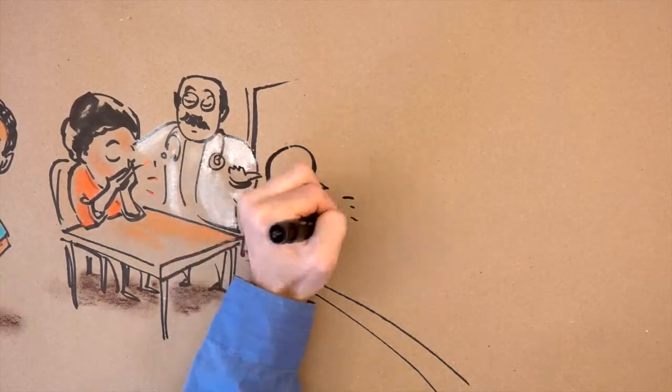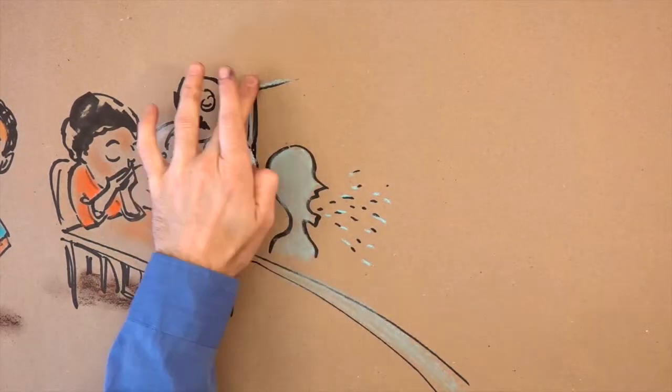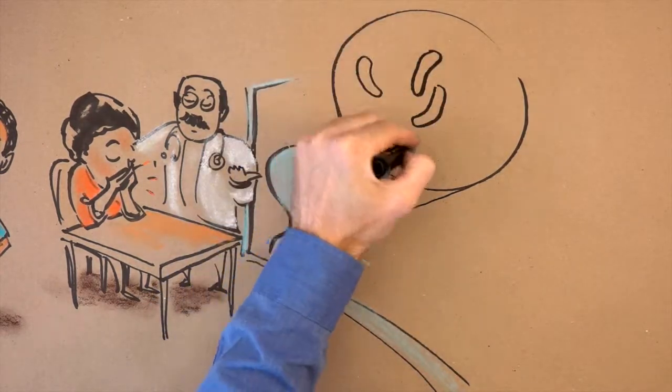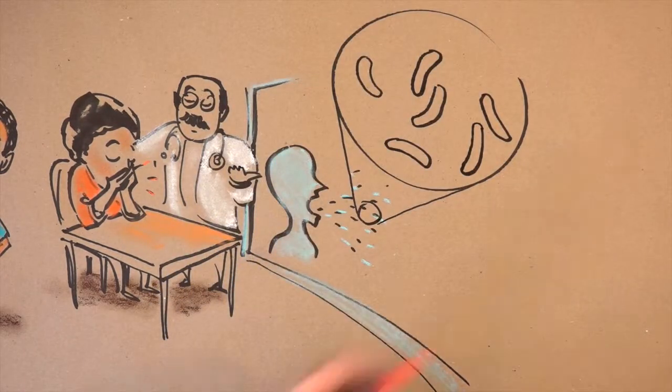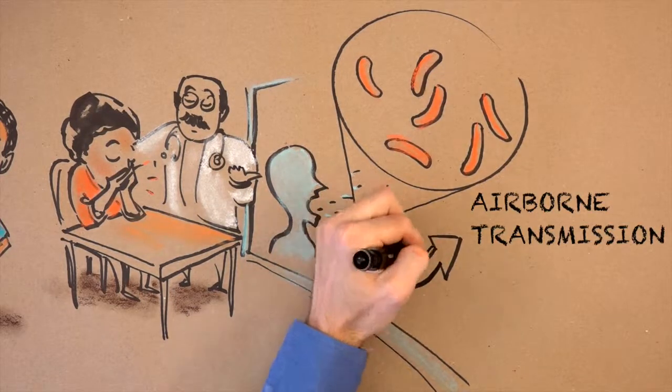The doctor said that TB is caused by a type of bacteria that is spread through the air. When someone sick with TB coughs or sneezes, tiny drops of TB bacteria are sent through the air that we breathe in. This is called airborne transmission.